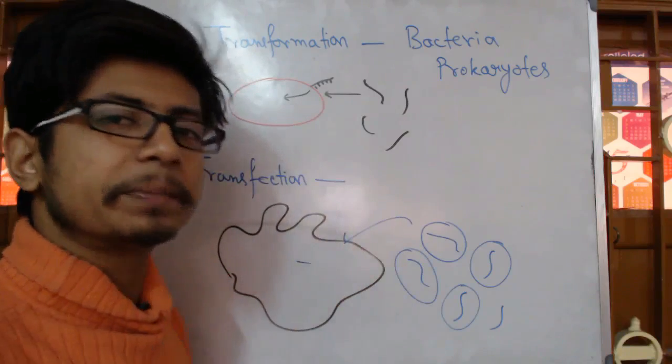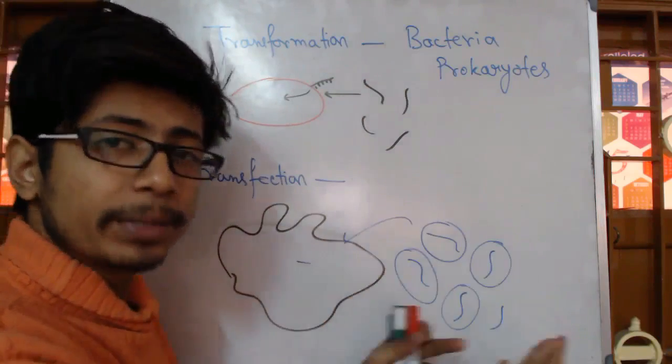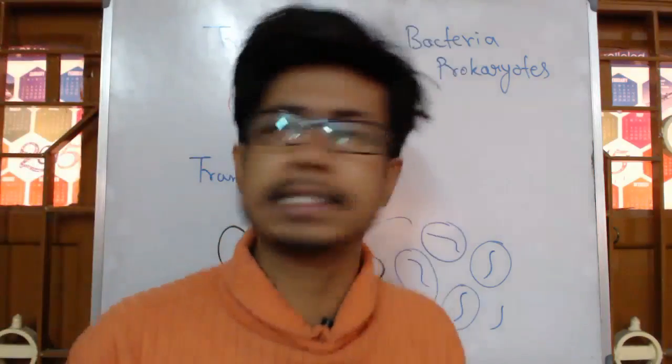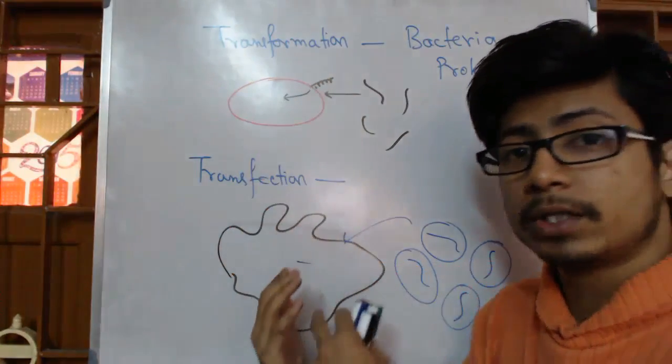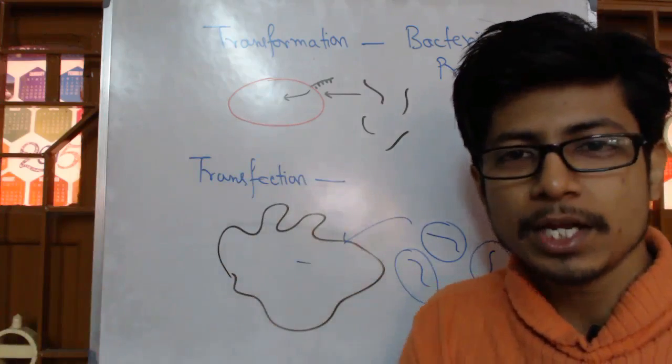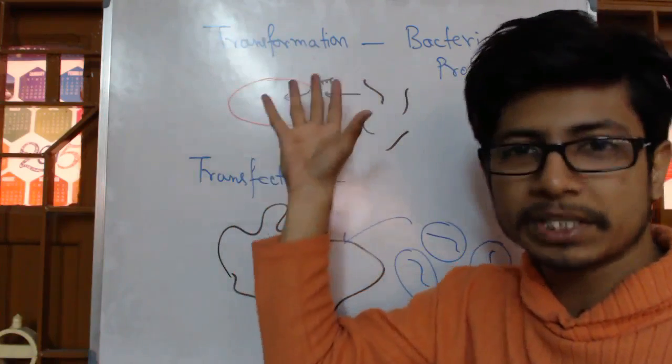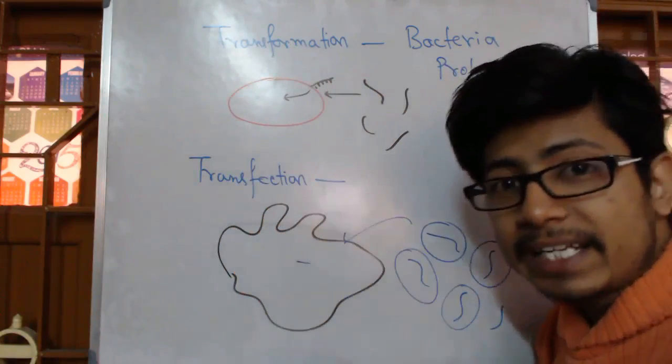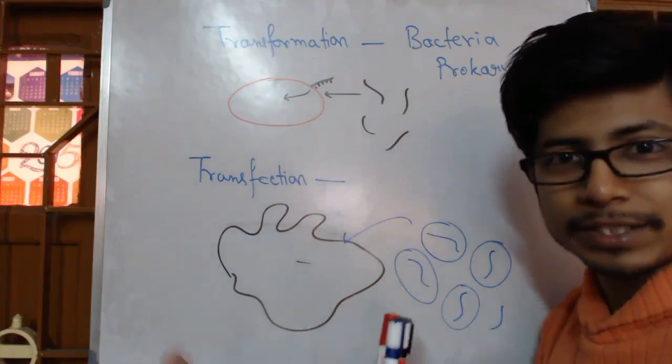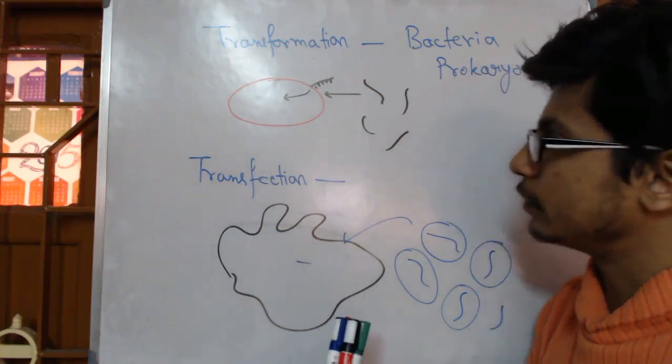As you know, the process is different but the idea is the same. So why give two separate names? If we can give it like transformation of prokaryotes, transformation of eukaryotes, why do we give transfection? Now one probable reason for that I think is that transformation - this term for eukaryotic cells refers to the transformation of cell into cancerous cell. So when a normal cell becomes cancerous, that phenomenon is known as transformation in eukaryotes. That is why if we keep the same name for eukaryotes for transformation, it would create confusion.